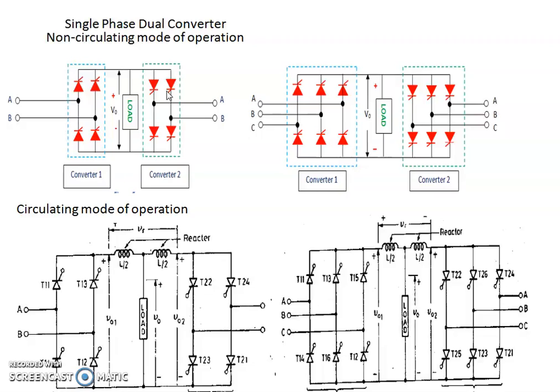This time delay ensures reliable commutation of SCRs in the outgoing converter. If the incoming converter is triggered before the outgoing converter has completely turned off, a large circulating current would flow between the two converters. With non-circulating current mode of dual converter, the load current may be continuous or discontinuous. The control circuitry for the dual converter is designed to give satisfactory operation during both continuous and discontinuous load current.